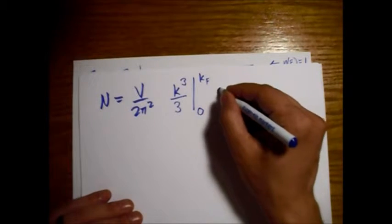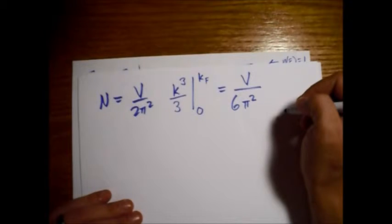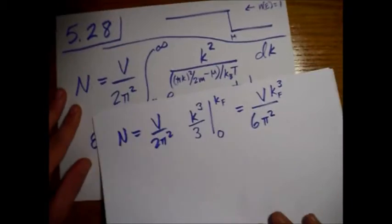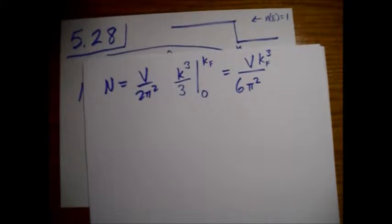So this integral is not difficult. We're going to have v over two pi squared, and it's just k squared. So we just get a k to the third power over three. And it's evaluated from zero to this k sub f, which is the largest k at which there are still particles. So, let's just write this out. We'll have a six pi squared on the bottom. On the top, we're going to have this v, and then we'll have a k sub f and that's cubed.